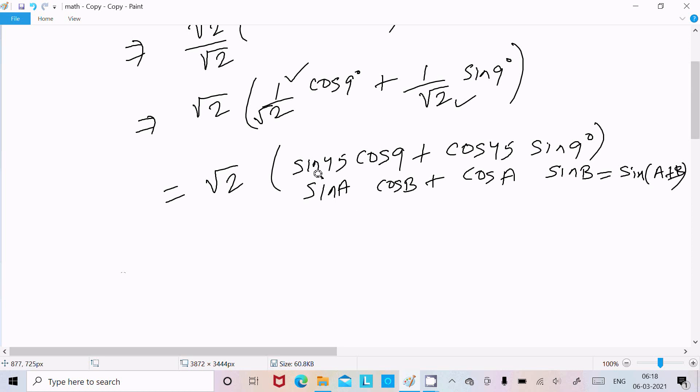So here I assume this one sin A, this one cos B, plus cos A, here sin B. So √2 we can write sin(A + B), 45 + 9, so this becomes √2 sin 54° if you add.